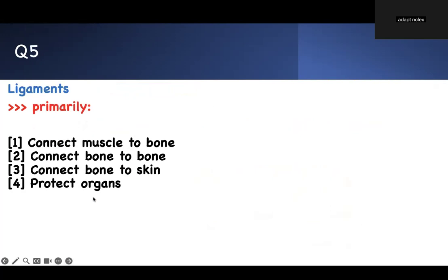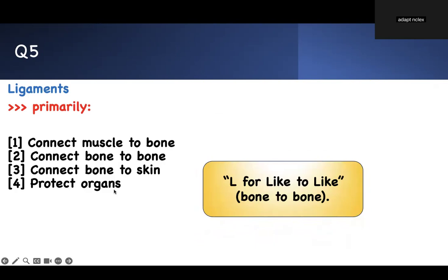Number five. Ligaments primarily. What do you need to know? Don't look at the answer choice. Go for the keyword the question is asking. I want you to associate it with things. Ligament. There's a big mnemonic for that. L for like. L for like to like. Therefore, bone to bone, not muscle to bone. That's tendon. Muscle to bone is tendon. But bone to bone is a ligament. Therefore, number two is the right answer.